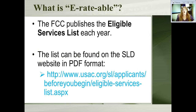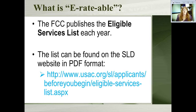Every year the FCC posts an Eligible Services List — a list of all the products and services you can get a discount on through the E-rate program. There's a URL you can visit to see the current list. Whenever you're applying for E-rate, make sure you look at the upcoming year's list, as it's updated every year. They're always paying attention to new technologies, new ways of accessing internet, new construction projects. Always make sure you're looking at the future year's list for what will be eligible.